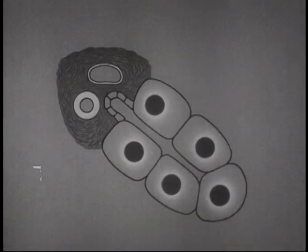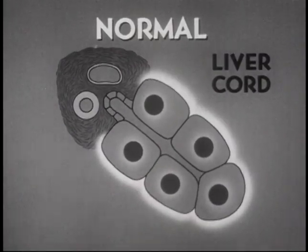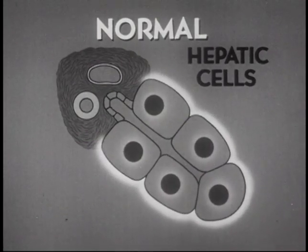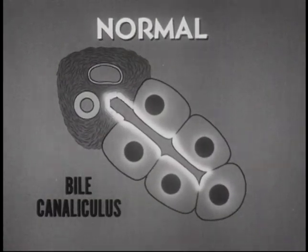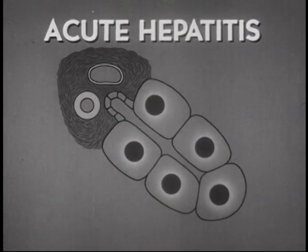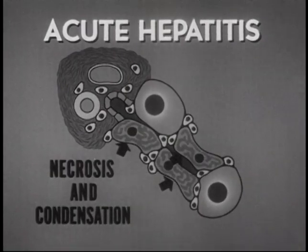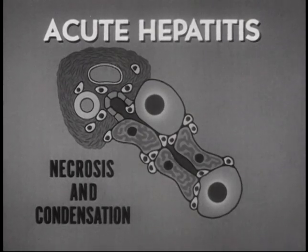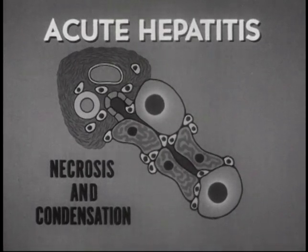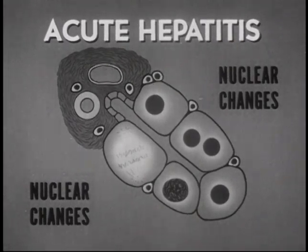The histologic changes of acute hepatitis have been studied in biopsy and post-mortem material. In acute hepatitis, one of the earliest findings is a diffuse cellular infiltration. There may be marked cellular necrosis and condensation of the hepatic parenchyma. The clinical severity of the disease may not parallel the histologic severity. Necrosis is followed by cell regeneration. Nuclear changes and variations in cell size and staining occur early and may persist after clinical recovery.